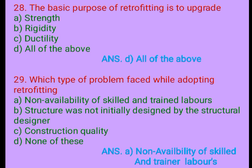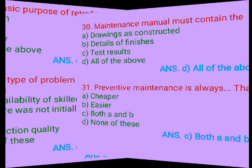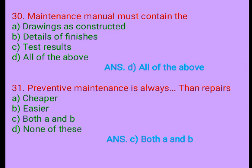Question 29. Which type of problem is faced while adopting retrofitting? A. Non-availability of skilled and trained laborers, B. Structure was not initially designed by a structural designer, C. Construction quality, D. None of these. Answer: A. Non-availability of skilled and trained laborers. Question 30. Maintenance manual must contain: A. As-constructed drawings, B. Details of finishes, C. Test results, D. All of the above. Answer: D. All of the above.